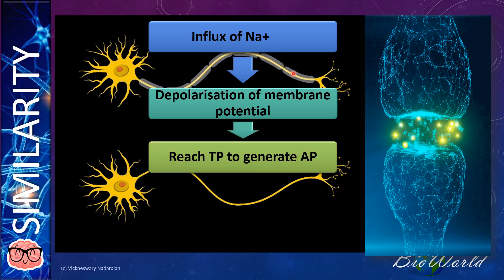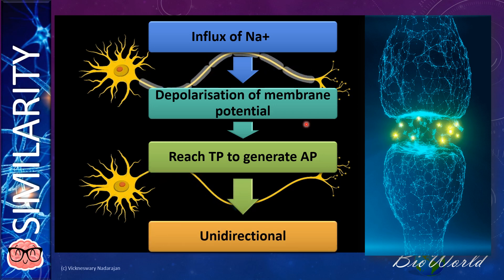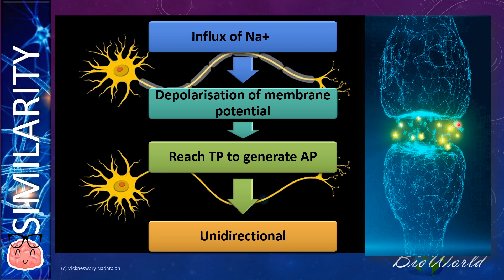Once the sodium ions are in the axon or in the dendrite, they both cause threshold potential to form, and after which action potential can be generated. Finally, we find the transmission of impulse in both axon as well as at the synapse is unidirectional. For the axon, it is from the cell body to the terminal axon, whereas for the synapse, it is from the synaptic knob to the dendrite.